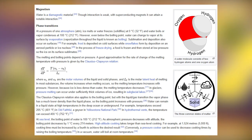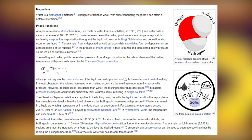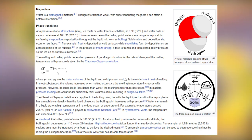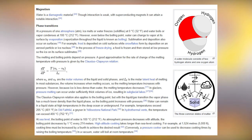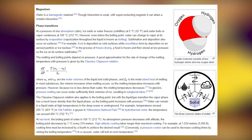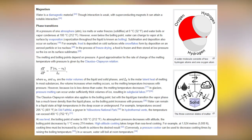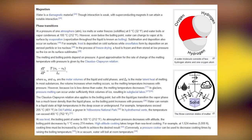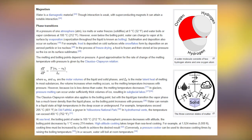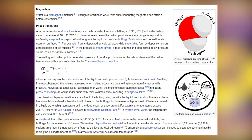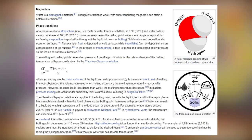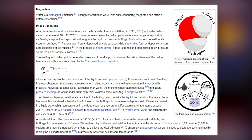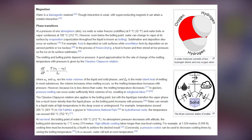The Clausius-Clapeyron relation also applies to the boiling point; with the liquid-gas transition, the vapor phase has a much lower density than the liquid phase, so the boiling point increases with pressure. Water can remain liquid at high temperatures in the deep ocean or underground. Temperatures exceed 205°C in Old Faithful, a geyser in Yellowstone National Park; in hydrothermal vents, they can exceed 400°C. At sea level the boiling point is 100°C, decreasing by 1°C every 274m of altitude. At 1524m (5000ft), cooking time must be increased by a fourth.